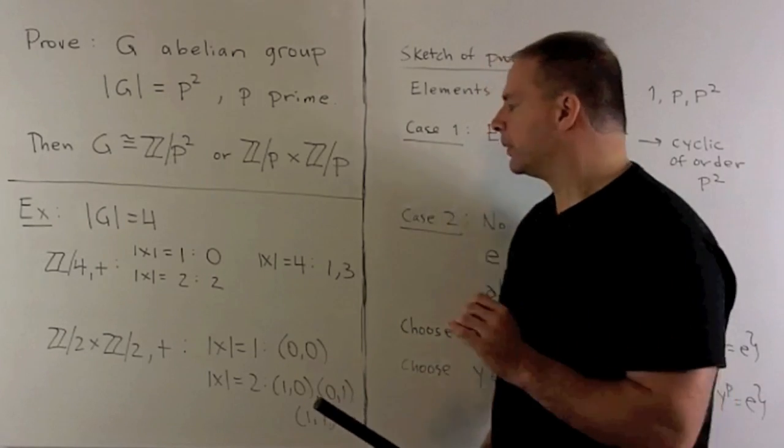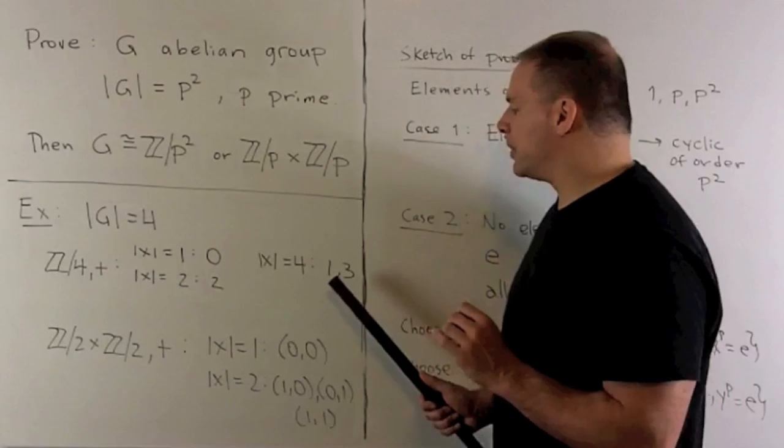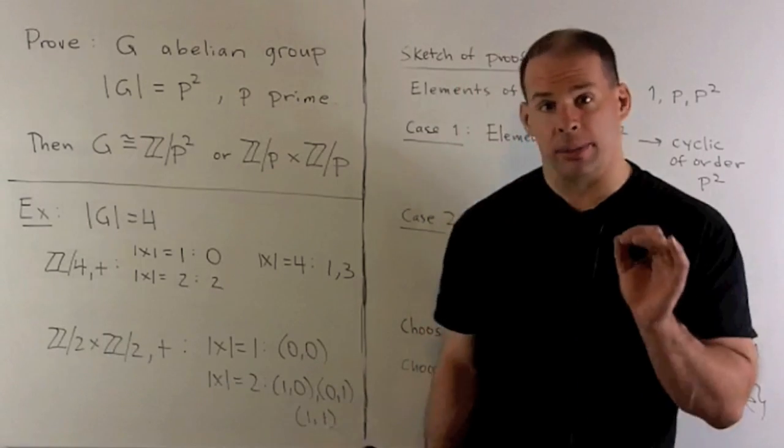You'll note the difference here. This group has elements of order 4. This group has no elements of order 4.